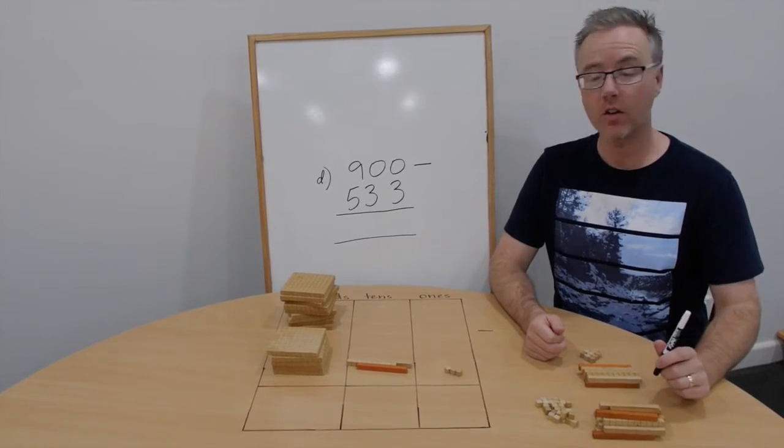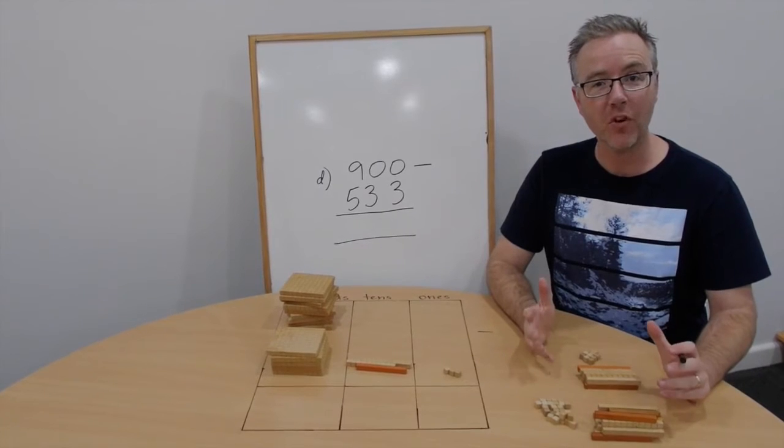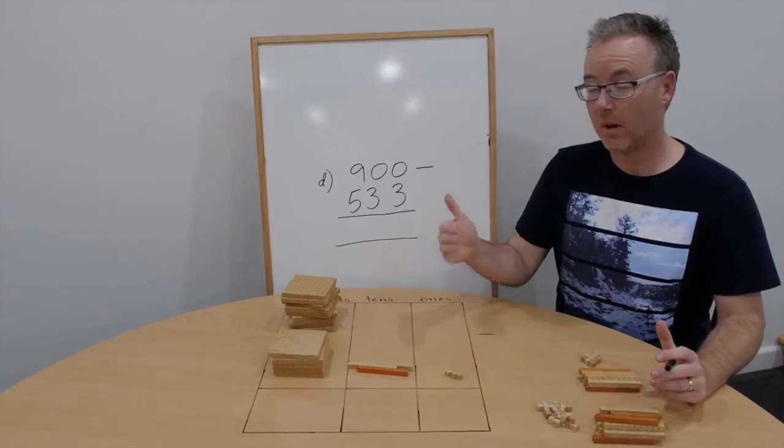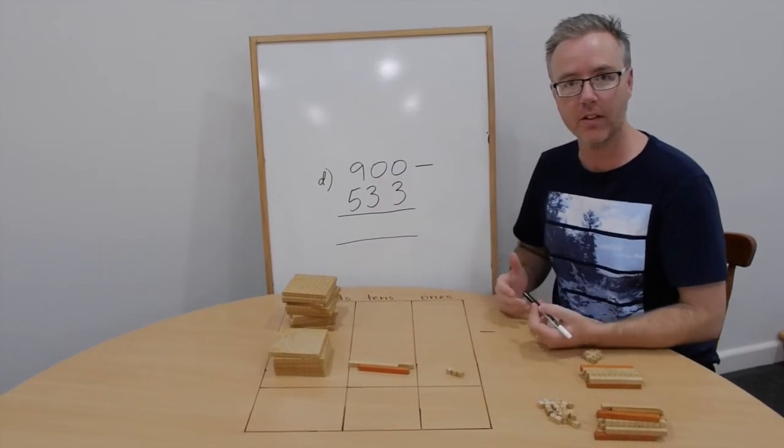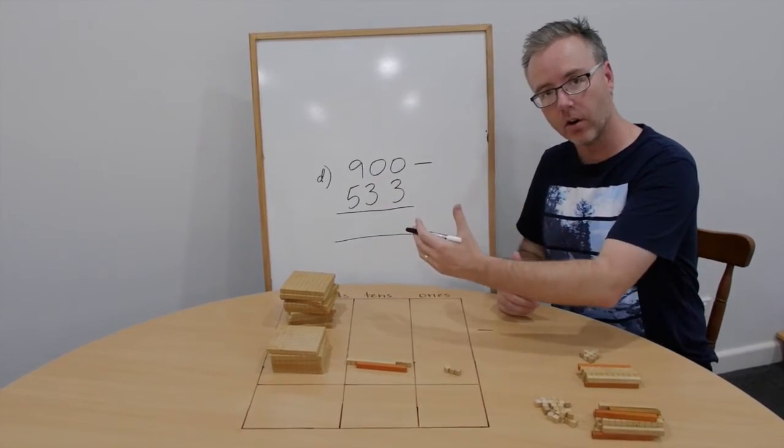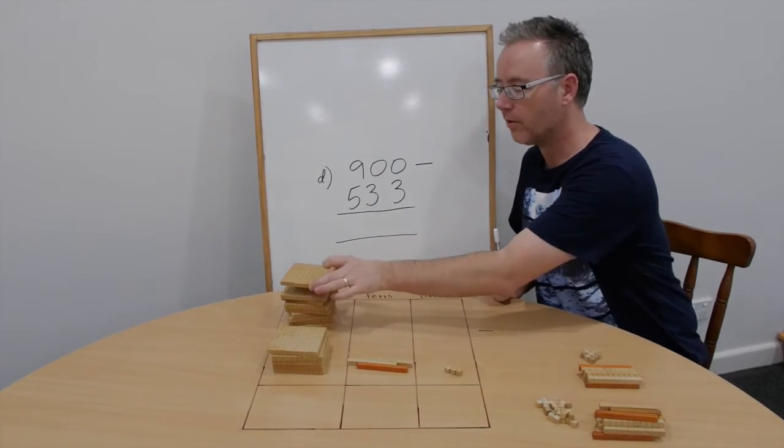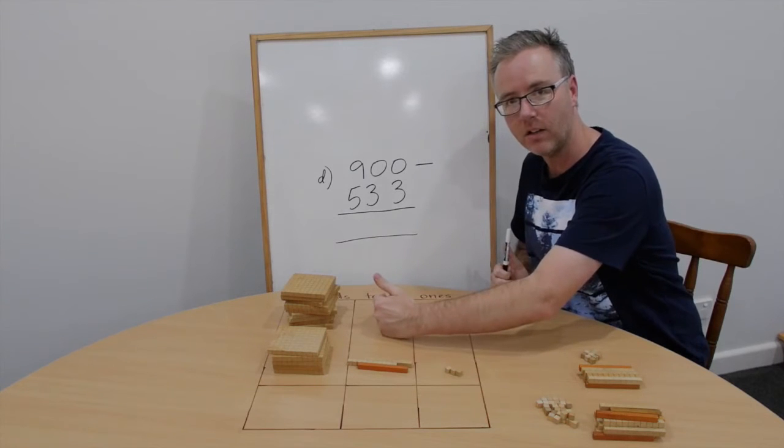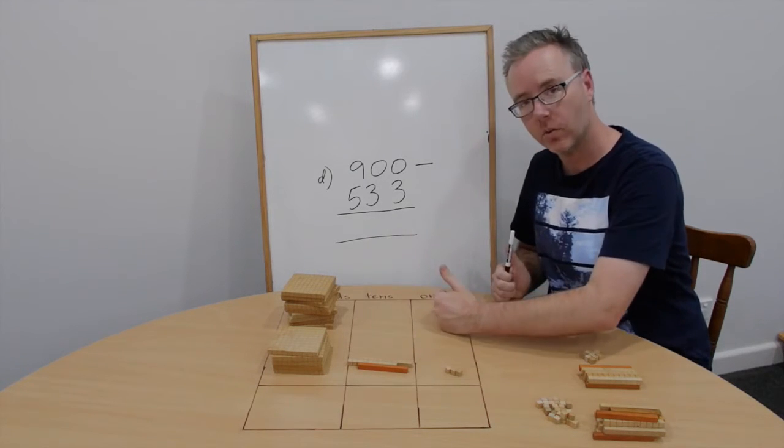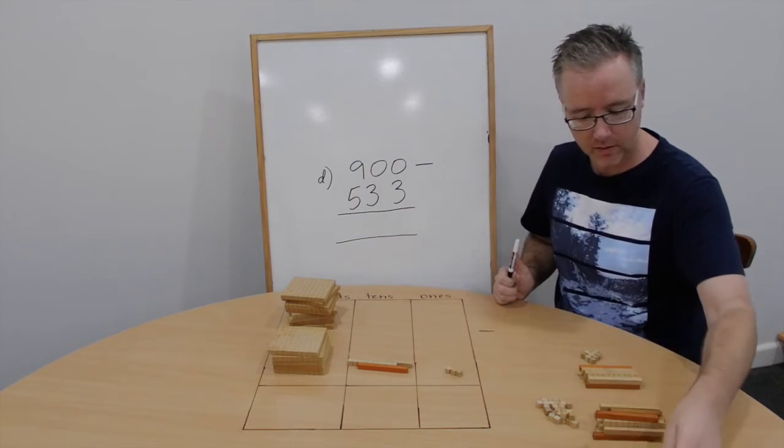Question D. 900 take away 533. Now before we start, we need to do two methods of the trading, because we can't actually borrow from the tens column. So let's go all the way across. But remember everybody, you can't move from the hundreds straight across to the ones. You need to just move to the next one, then you do it again to the ones column. So we trade 100 for ten tens.